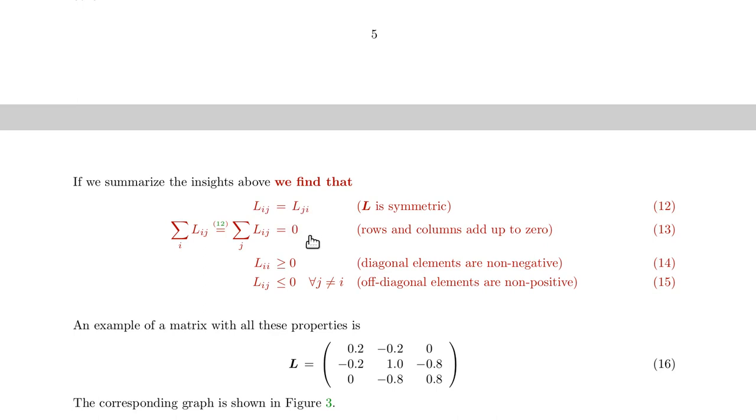Then, because no heat gets lost or gained, the sum over the rows as well as the columns add up to zero. And as I've just argued, the diagonal elements are non-negative and the off-diagonal elements are non-positive.